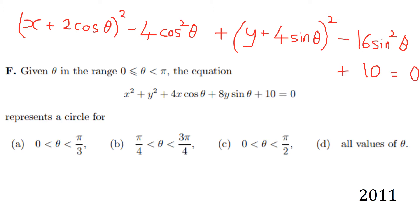With a maths question, if you're not sure what to do, do something you can do. If you're given, for instance, x² + y² + 4x + 8y + 10 = 0 and you want to investigate that circle, the best thing to do is complete the square to write it in the classic form. I've completed the square in red above and just need to tidy it up a little.